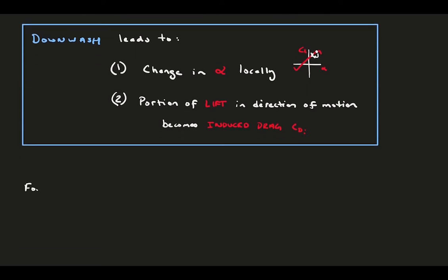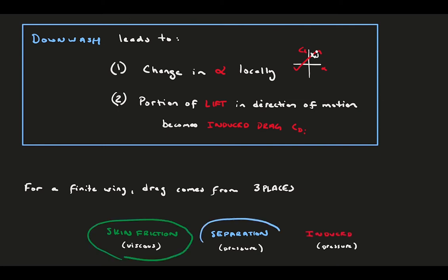Now we can consider this among our other force producing components. A finite span foil has drag from three sources. Skin friction comes from viscous forcing. Separation, which ultimately happens because of the boundary layer and viscous things, is actually a pressure drag. And now we have induced drag, a second form of pressure drag that comes from the lift tilting.